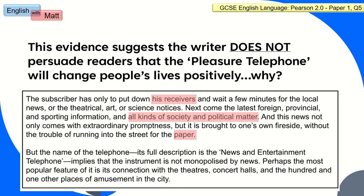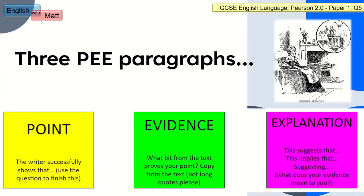Before we go back to the extracts, let me revisit PEE paragraphs, which is how I teach this question. I get students to use three post-it notes and write information on each one, then stick them on top of each other to create a little flip chart showing the three components of a paragraph. You can always start with a point: 'The writer successfully shows that...' then use the question to finish the sentence. The evidence is the bit you copy from the extract — not long quotes. Finally comes your inference, using sentence stems like 'this suggests that,' 'this implies that,' or simply the word 'suggesting.'